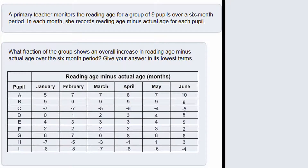In this question we are given a table that compares the reading age minus actual age of 9 pupils over a 6 month period. The question asks us what fraction of the group shows an overall increase in reading age minus actual age over the 6 month period, and to give our answer in its lowest terms.